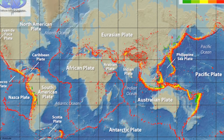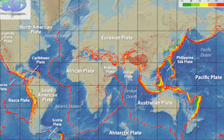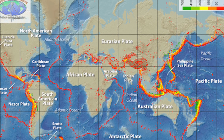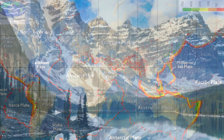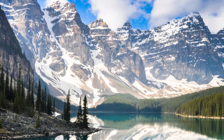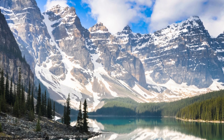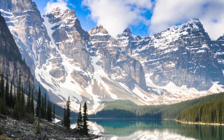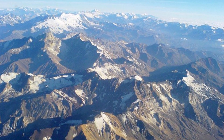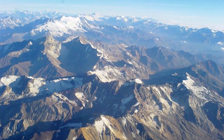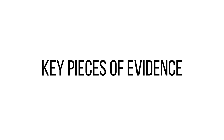The shifting plates at transform boundaries generate immense stress, leading to earthquakes. These seismic events can be devastating, but they also provide valuable information about the Earth's interior. Convergent boundaries not only cause earthquakes, but also create majestic mountain ranges. As plates collide and buckle, the Earth's crust uplifts, forming towering peaks like the Andes and the Rockies.